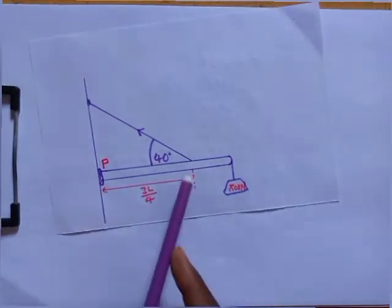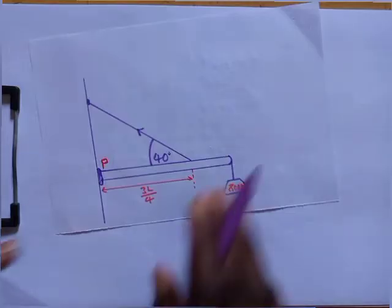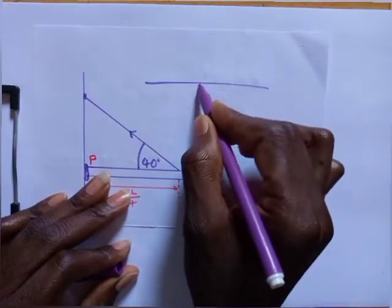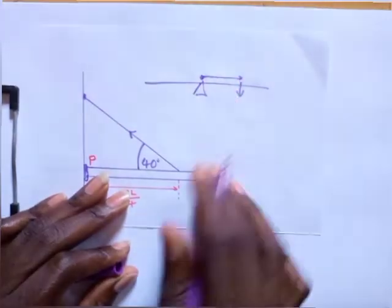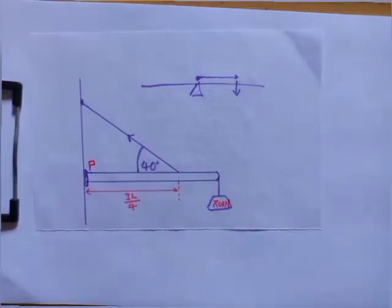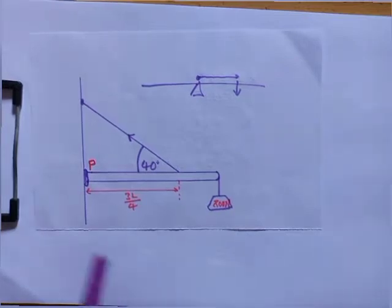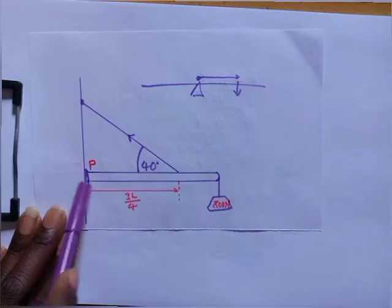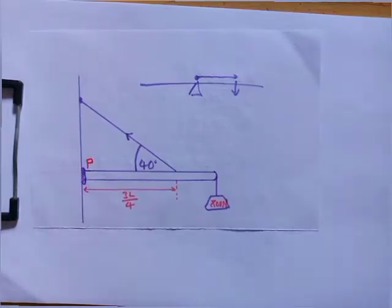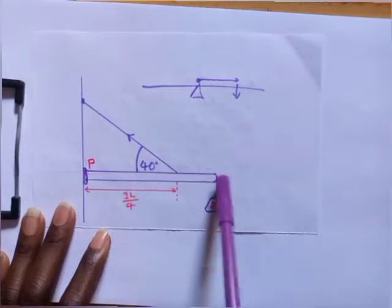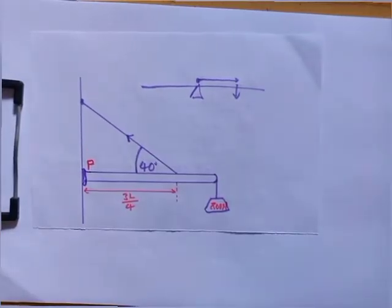We start by resolving forces into their components. Torque means the force acting at a certain distance from the pivot. At the pivot itself, there is no torque because there is no displacement or distance. All forces acting at the pivot point will have zero torque. But forces acting at any other point will experience torque because there is a distance from the pivot.